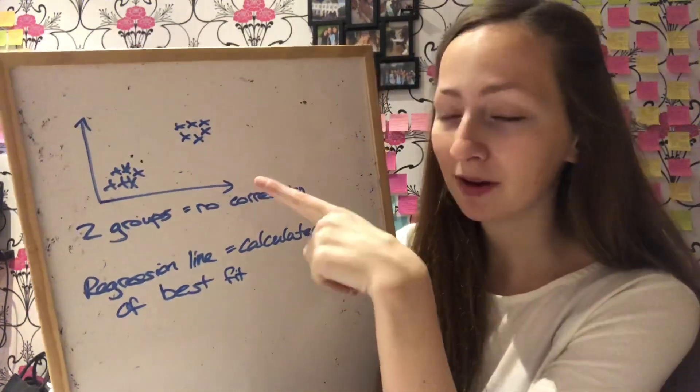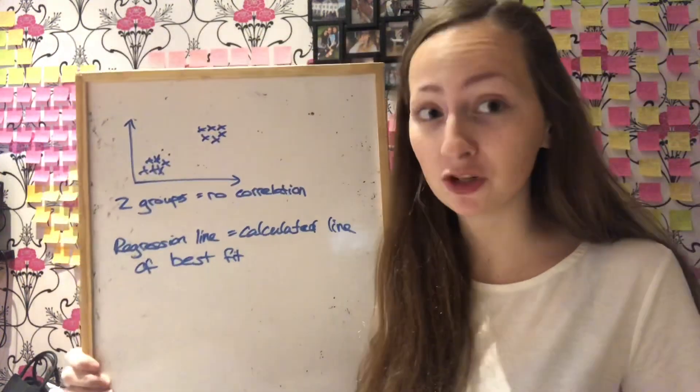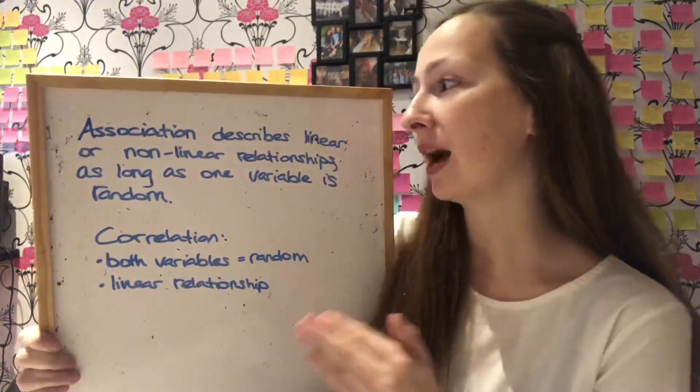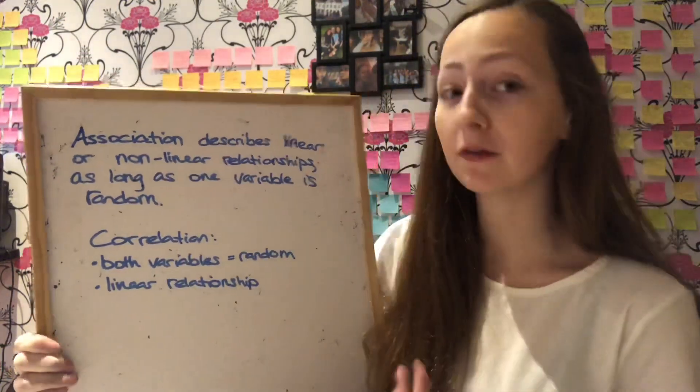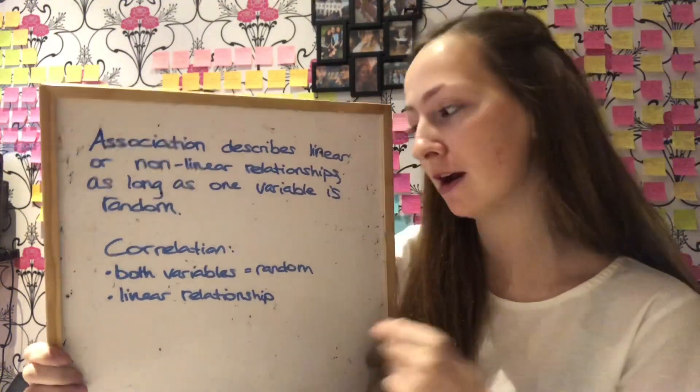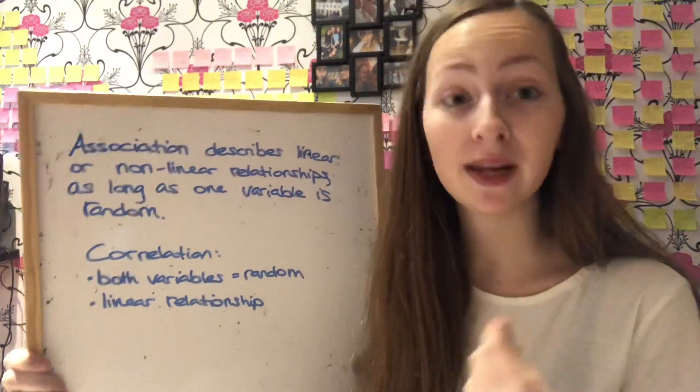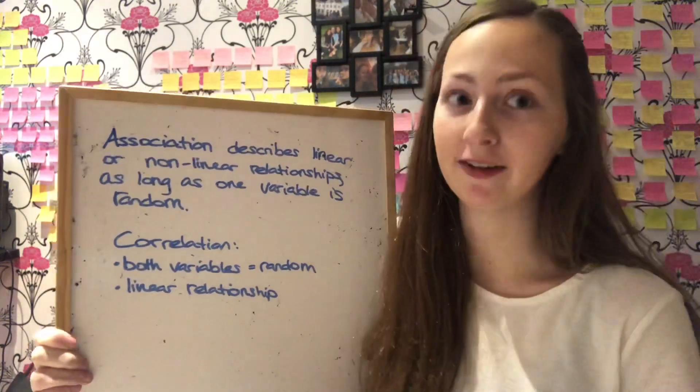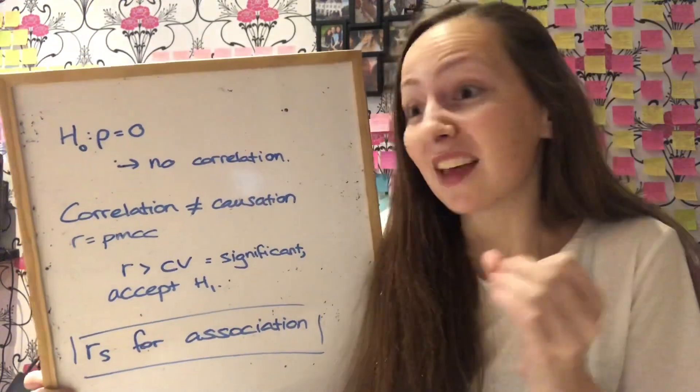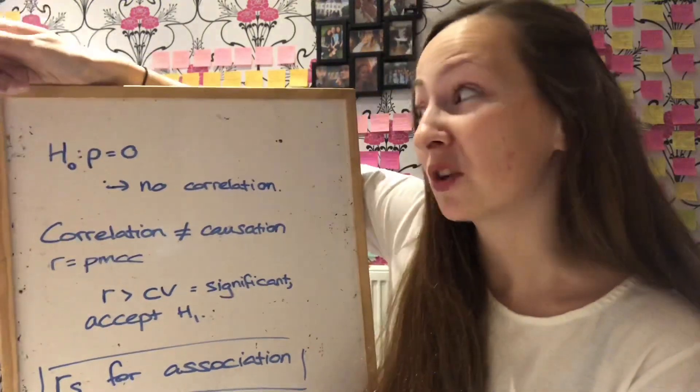And remember if you end up with this scatter graph like this there is likely to be no correlation because they're two separate groups. And remember that a regression line is just a calculated line of best fit. Okay so then we have an association which describes linear or non-linear relationships as long as one of the variables is random. And then a correlation is a special type of association but both variables must be random. The relationship must be linear. And therefore a change in one of the variables is likely to be accompanied by a great change in the other variable. So the key things you have to learn from this is just what to do with the information. You do not have to work out the rank correlations yourself. You don't with AQA anyway. Everything I'm saying is just from AQA. You just have to know what things sort of mean.